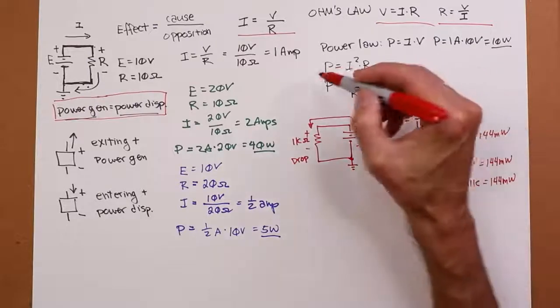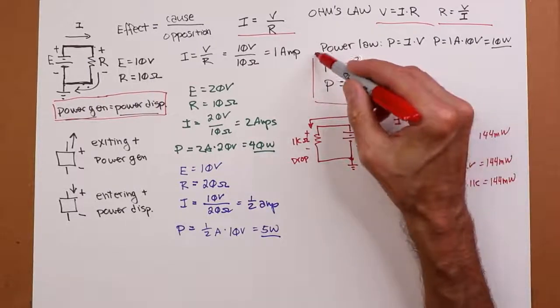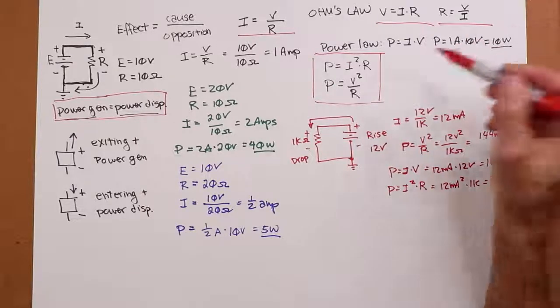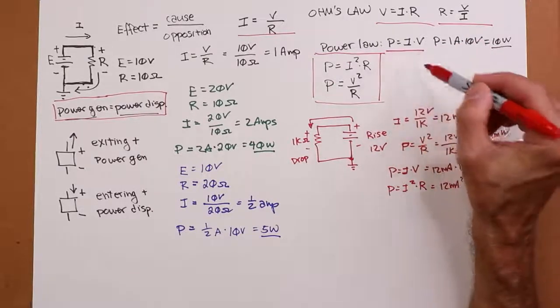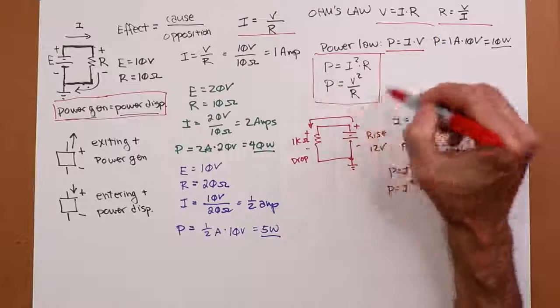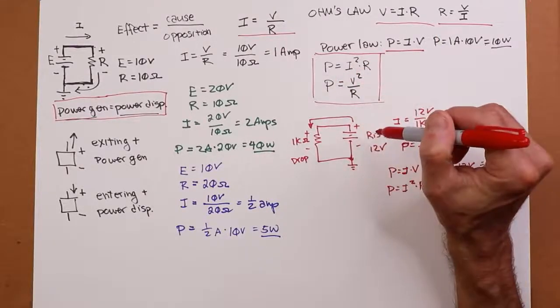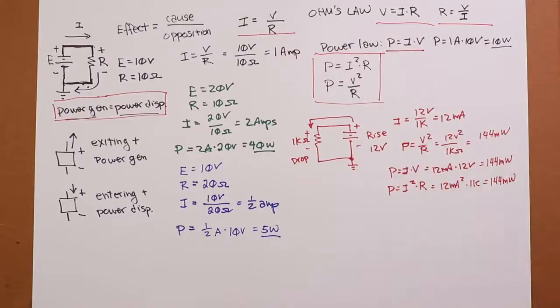And the fact that power generated has to equal the power dissipated. And then finally, we can sort of combine Ohm's law and power law. So there's three ways we can do it. The original way we looked at it, P is equal to IV. And then by combining Ohm's law, I squared R, V squared over R. And there you go.